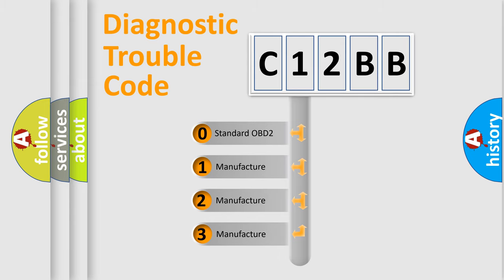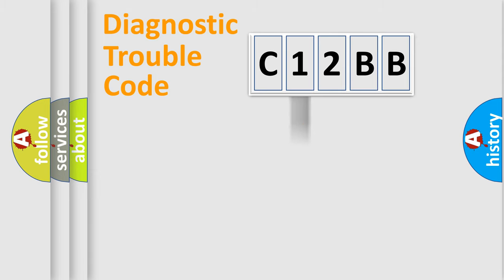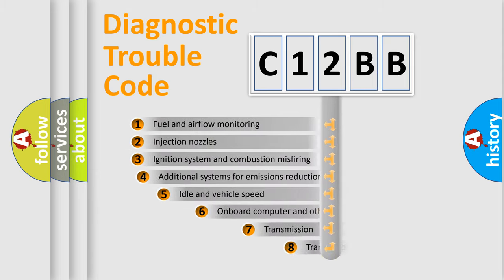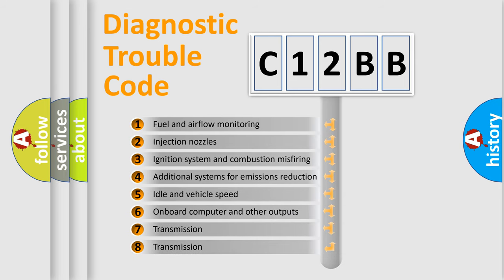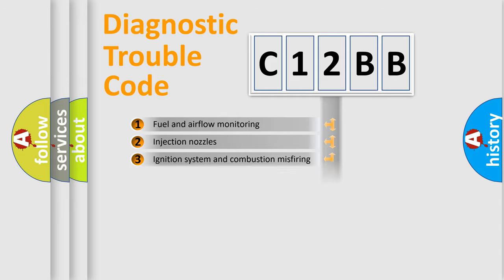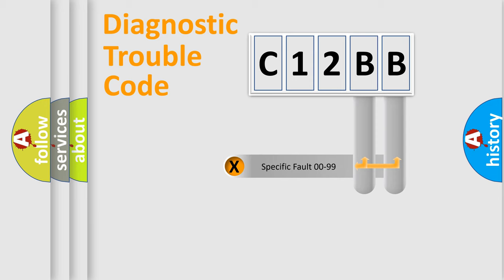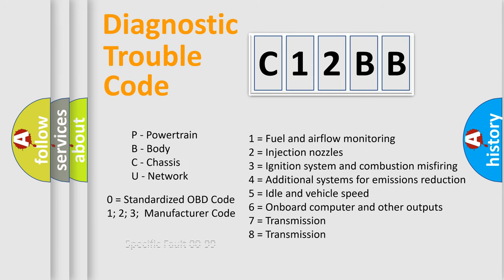If the second character is expressed as zero, it is a standardized error. In the case of numbers 1, 2, or 3, it is a more prestigious expression of the car-specific error. The third character specifies a subset of errors. The distribution shown is valid only for the standardized DTC code. Only the last two characters define the specific fault of the group. Let's not forget that such a division is valid only if the other character code is expressed by the number zero.